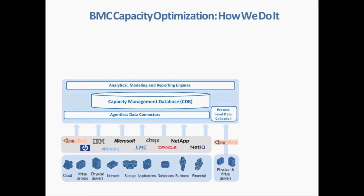One of the key differentiators from a data collection perspective is that we also have process-level data. Off to the right at the bottom, you see physical and virtual servers — process-level data collection. That is key for the advanced capacity planner who wants metrics from a process-level perspective collected from their individual servers.